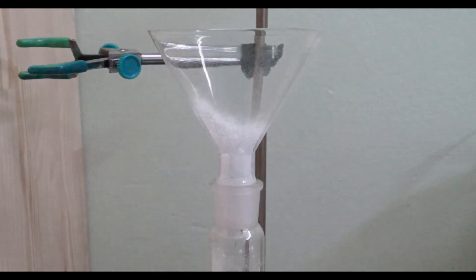I washed the beaker that contained the calcium chloride and the addition funnel with the remaining 300 milliliters of hydrochloric acid.